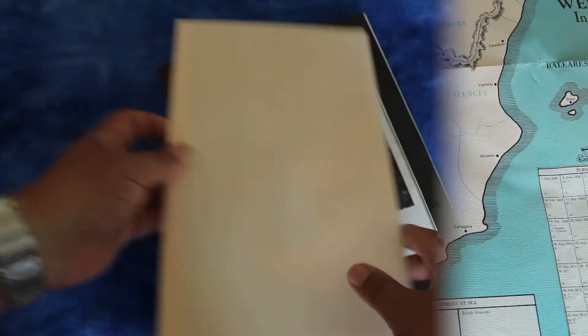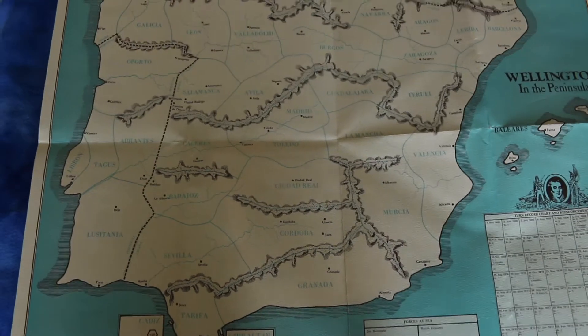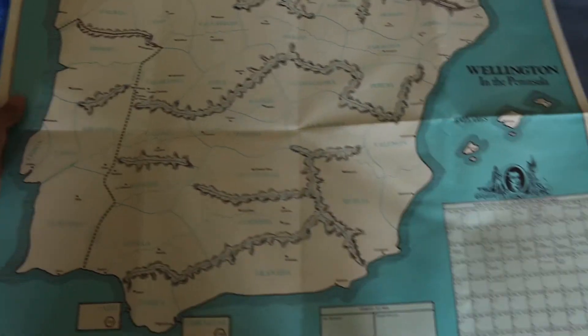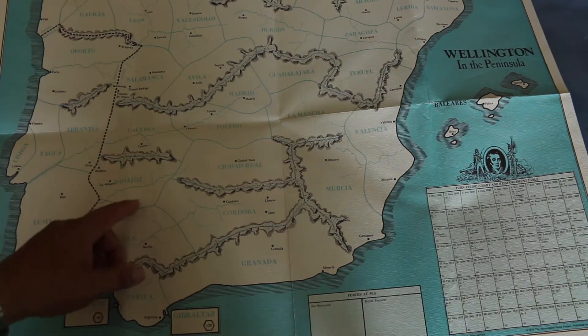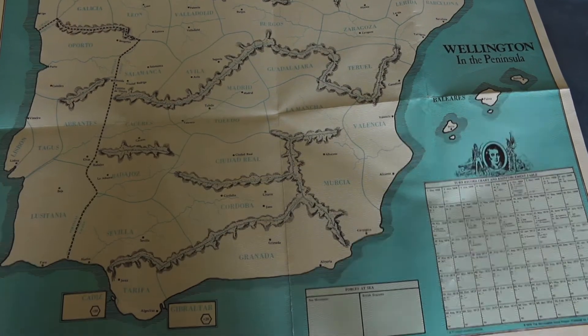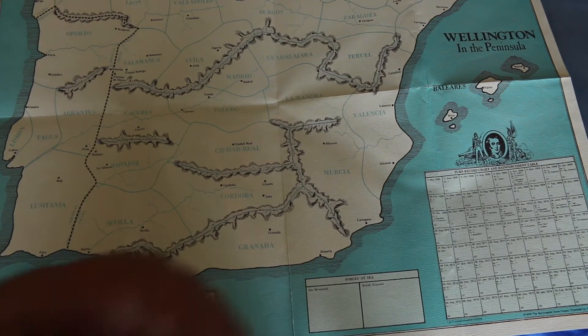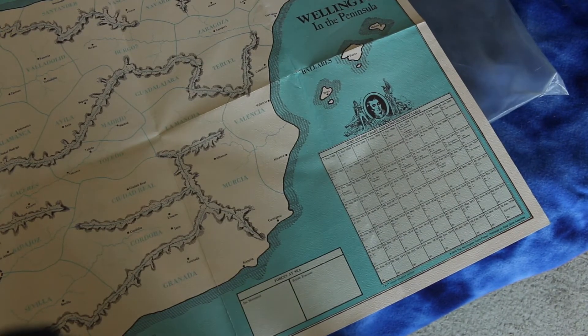Let's look at the map. Looks like some kind of area map. It's all on the Iberian Peninsula here. Interesting, there's Madrid, Gibraltar. And down here is a turn record chart and reinforcement table. Interesting.